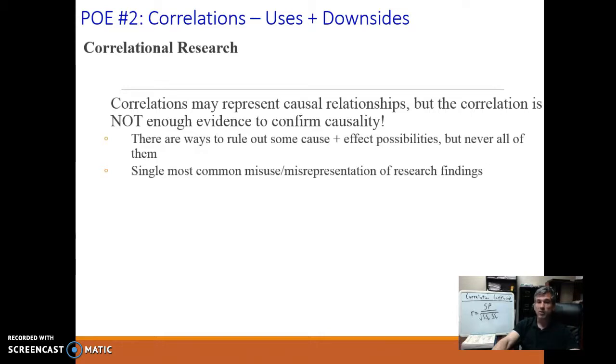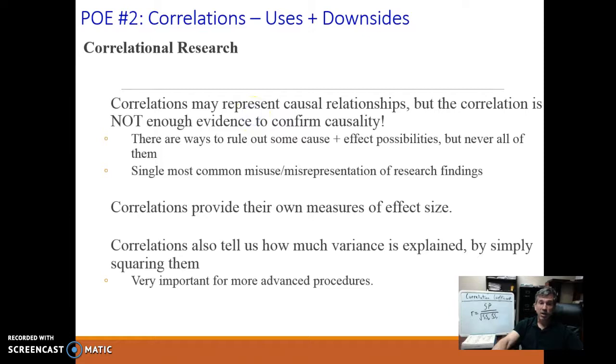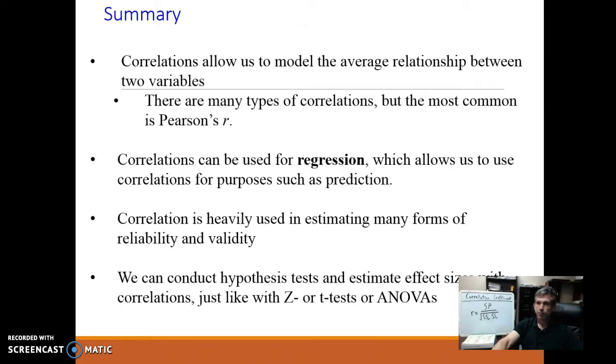You can rule out some cause and effects, but you can never pin down exactly one. This is the single biggest way out in the wild, out in the real world, that people will misrepresent or misinterpret research findings. They'll take correlational findings and conclude that they are confirming some kind of a cause and effect explanation. They don't. Correlations also provide their own measures of effect size, as we mentioned, and you can tell how much variance is explained by just squaring them. This is going to matter a lot if you get into graduate programs. You're probably going to be dealing with, at graduate level stats, how much variance is explained.